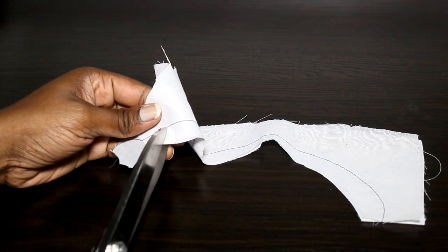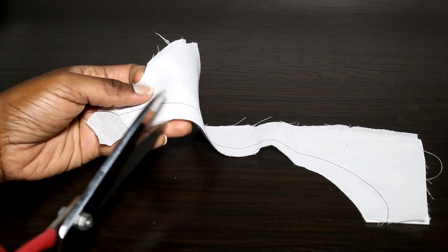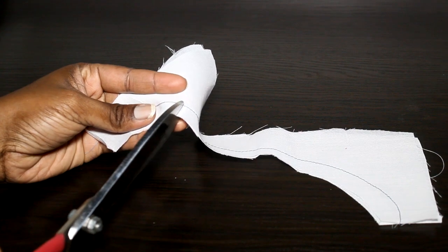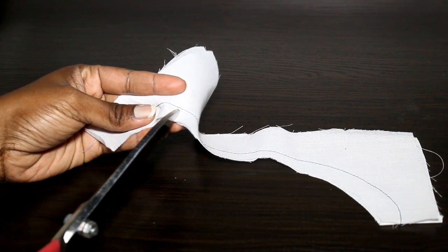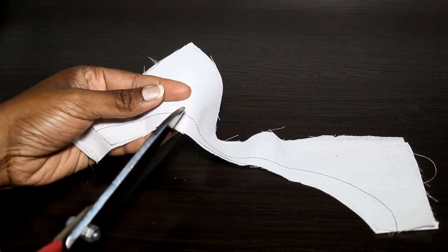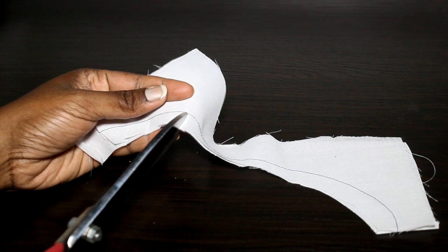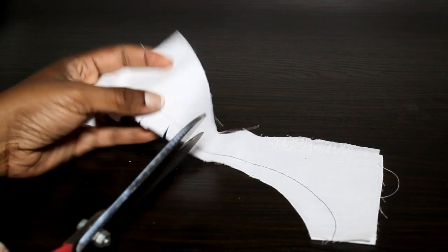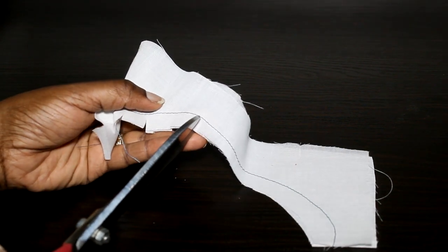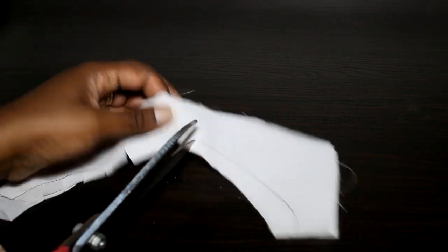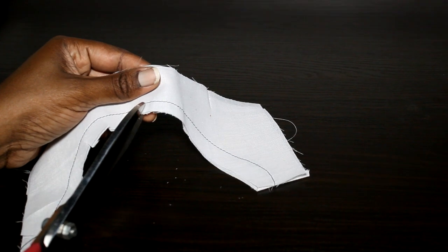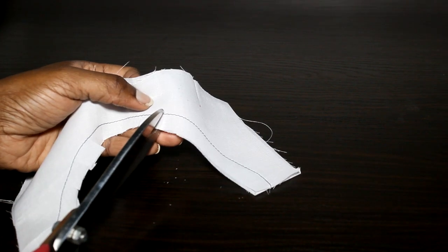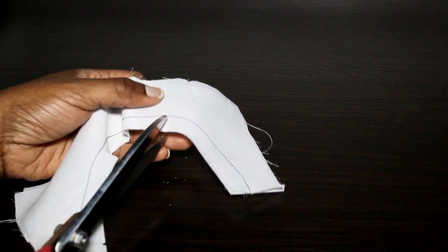So you're just going to make little cuts along the edge. As always, you don't go through the stitching line. I'm just making little cuts like that. Careful not to go through the line. Always be careful not to go through your stitching line. That's the most important thing.